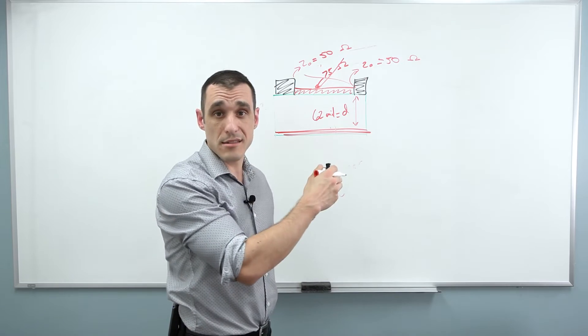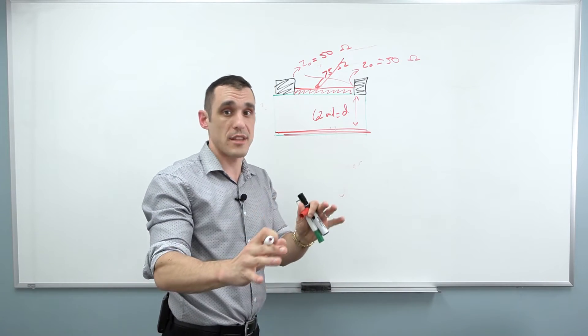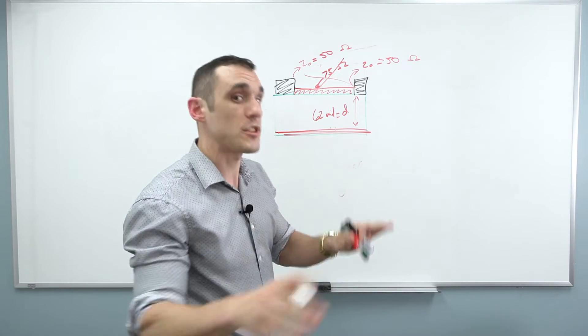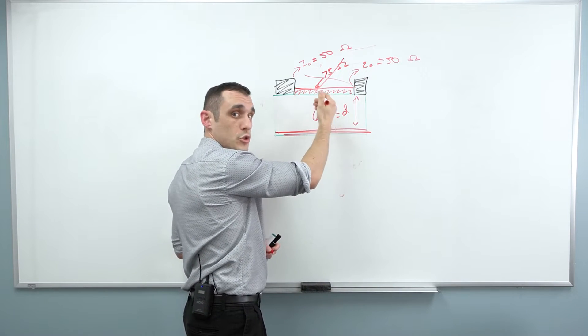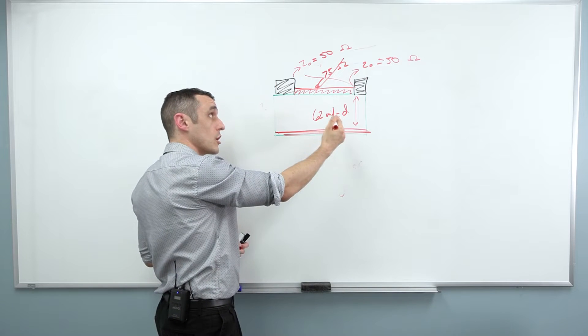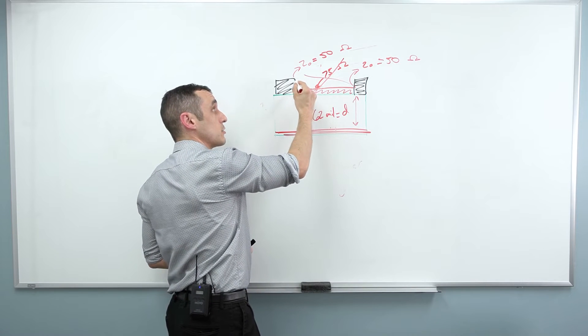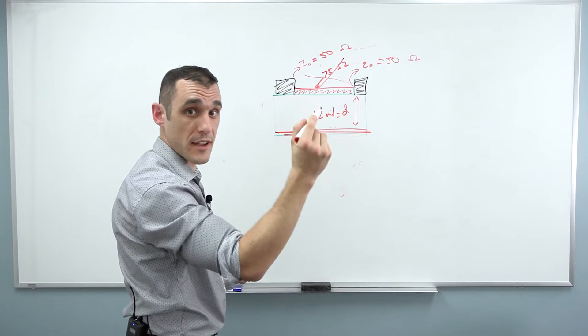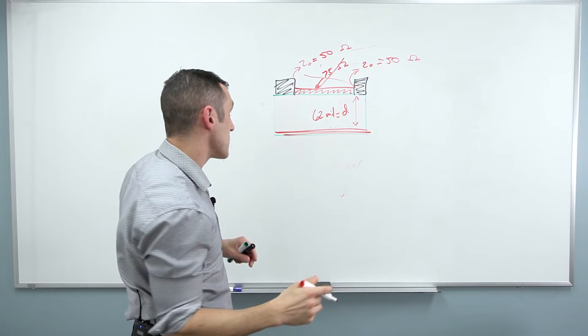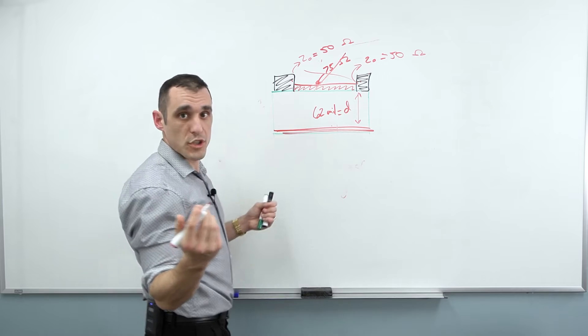And so you can use the rise time to figure out an approximate, not the exact, but the approximate limiting length that you should keep your trace length below in order to ensure that you can get a signal from this component to this component over a high-speed interface without worrying about the impedance mismatch.